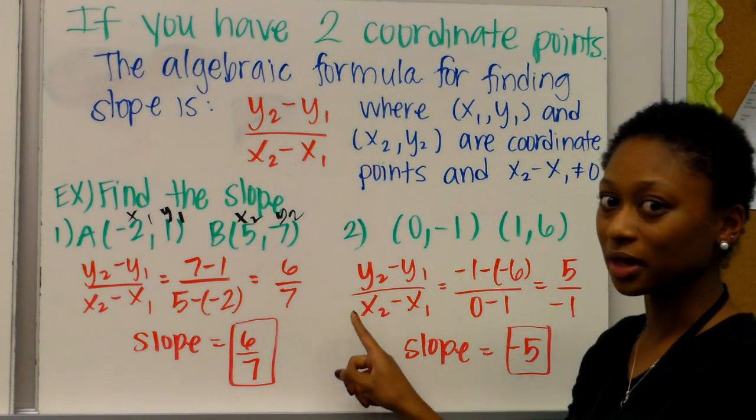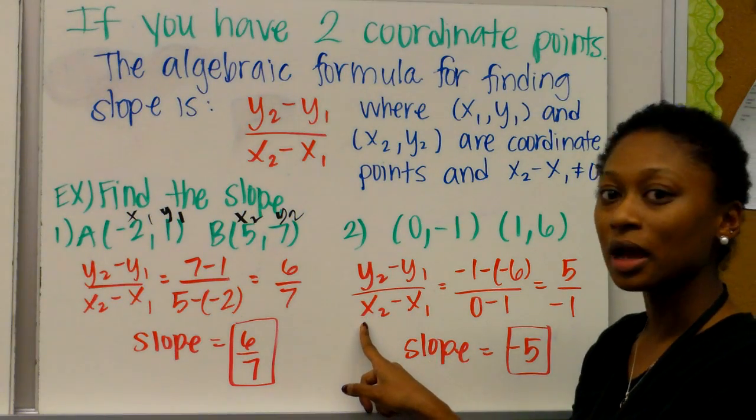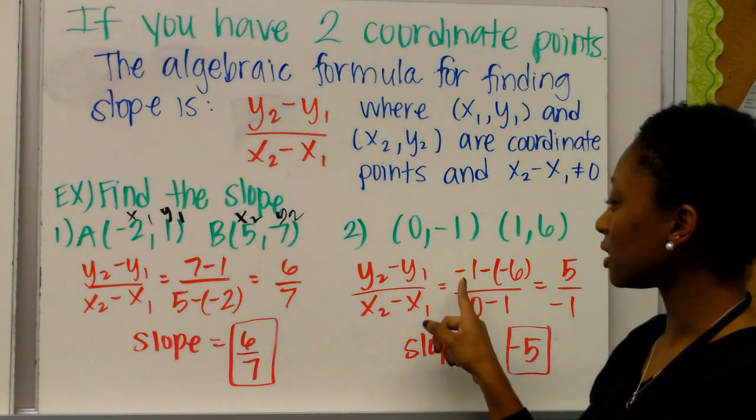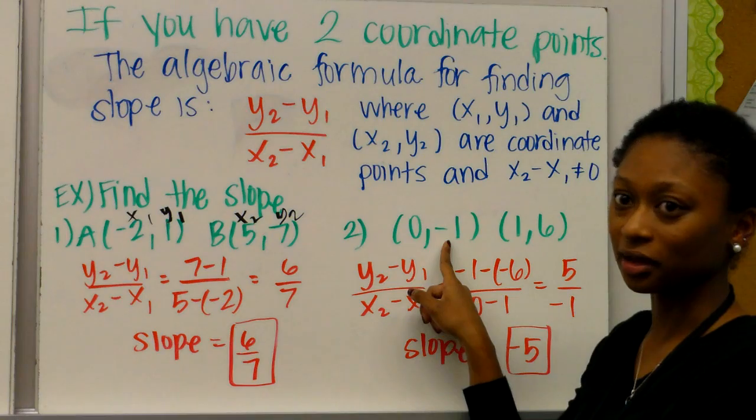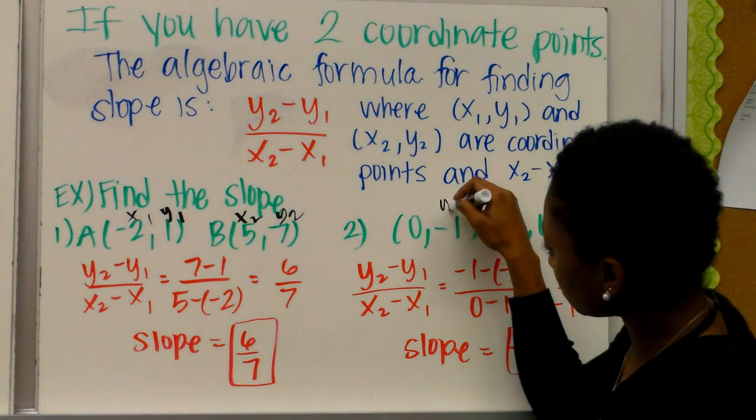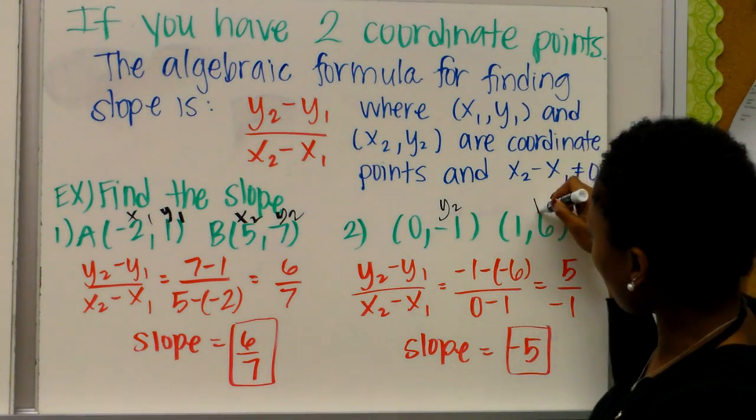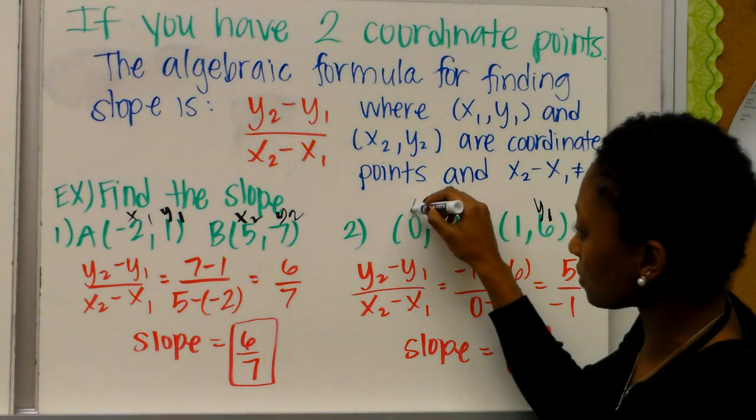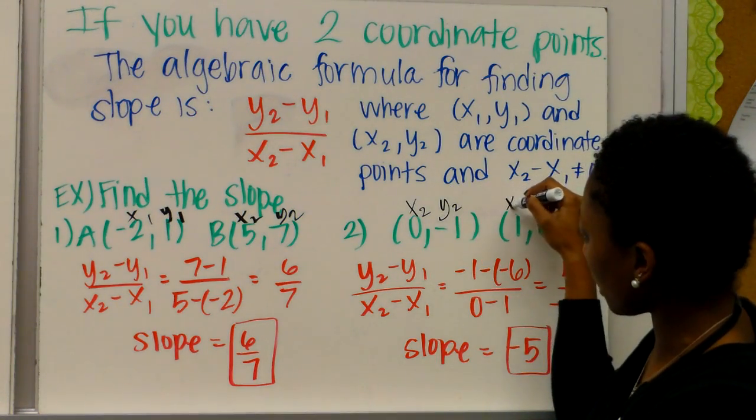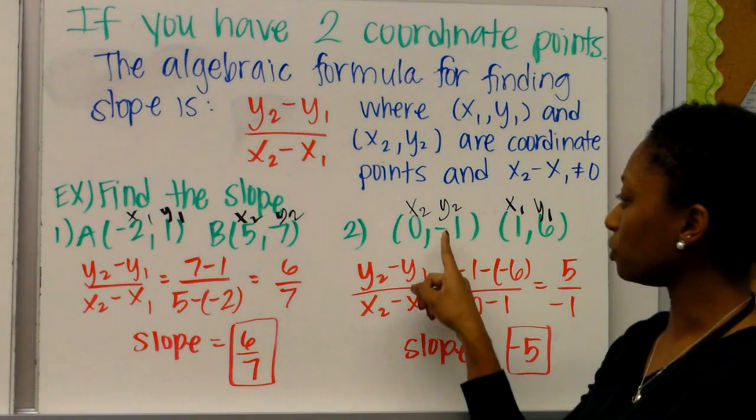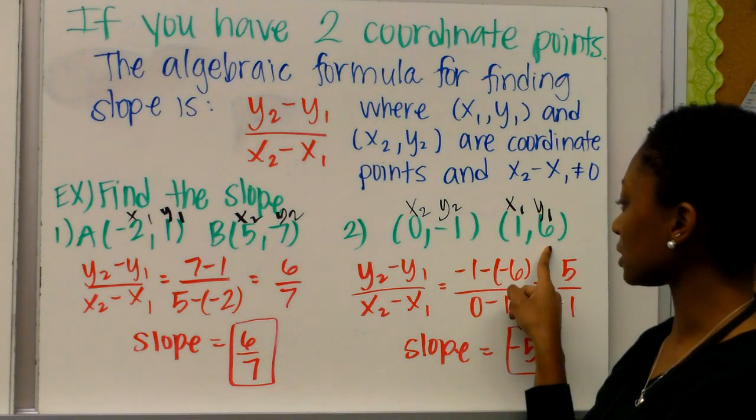So again, y2 minus y1 over x2 minus x1. This time, I chose to start with negative 1. So that makes this my y2, and this my y1. That makes this my x2, and this my x1.